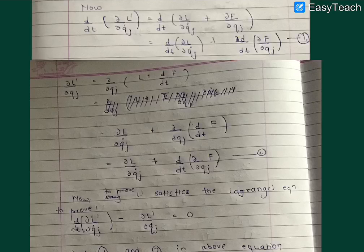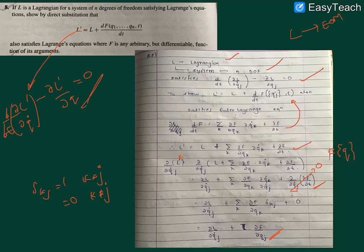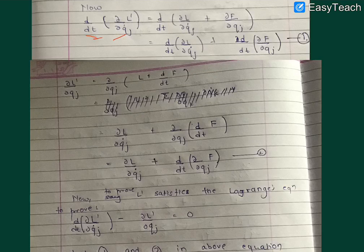Further, if we go on to find d/dt of what we found, we will substitute this in here. We find that we get d/dt(∂L/∂Q̇_j) + d/dt(∂F/∂Q_j). This is our equation 1.